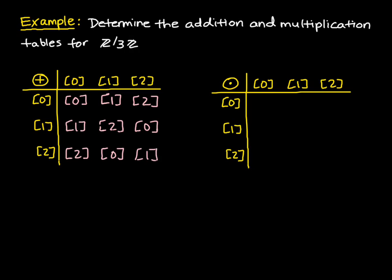Now let's make a multiplication table. Here, our first row and first column are all going to be 0, because that's what we get when we multiply 0 by these other elements in this set. But now, we do 1 times 1, we get a distinct element 1. We get 2 here, 2 here. And then 2 times 2 is 4, but that's congruent to 1 in Z mod 3Z. So we've determined the addition and multiplication tables for this given set.